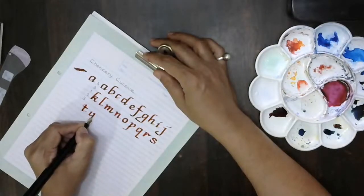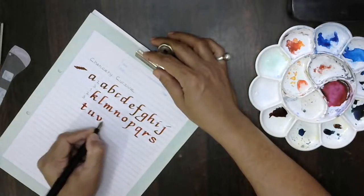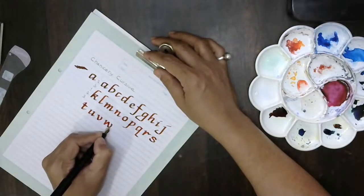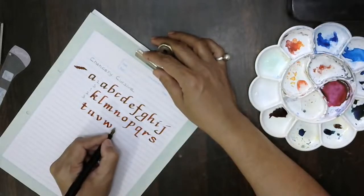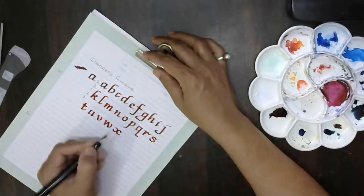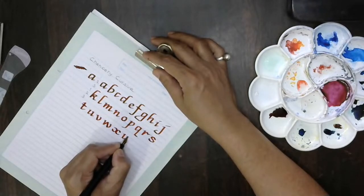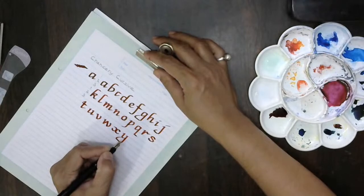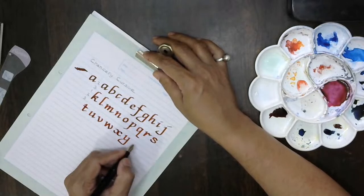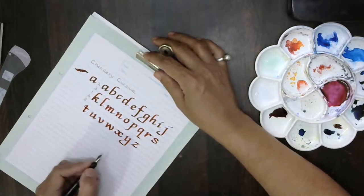Then u, v, w, x, y, and z. Right here. So we are finished with the lowercase.